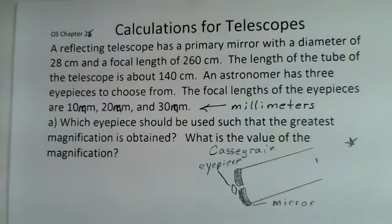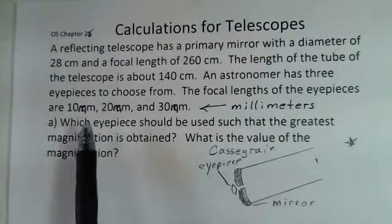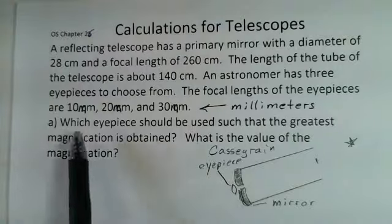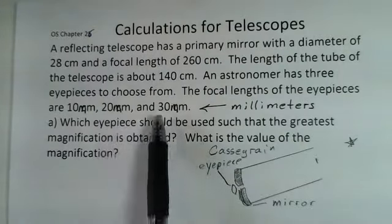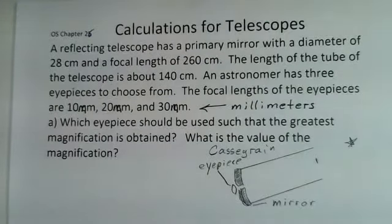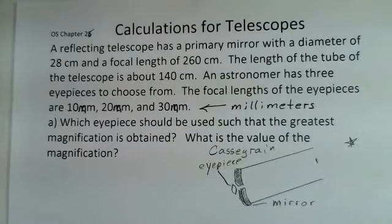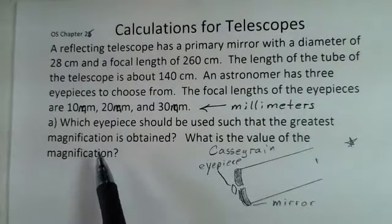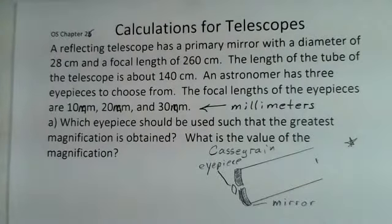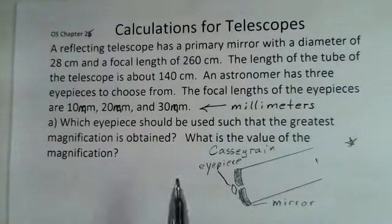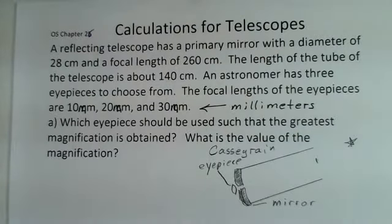An astronomer has three eyepieces with focal lengths of 10 millimeters, 20 millimeters, and 30 millimeters. I initially typed centimeters, but these should be millimeters—that's how eyepieces are commonly labeled. Suppose we want the greatest magnification. Which eyepiece should be used and what is the value of that magnification?